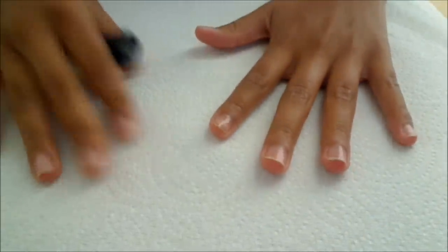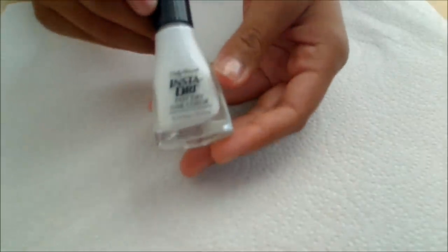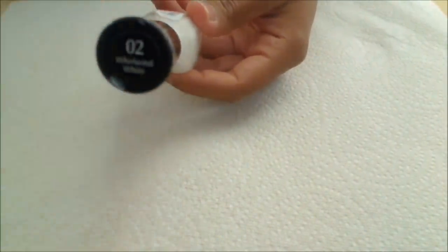I have already applied a base coat, so I'm going to take my Sally Hansen Insta Dry nail polish in Whirlwind White and paint this all over my nails.